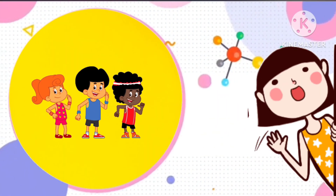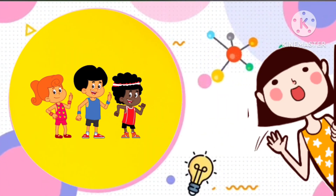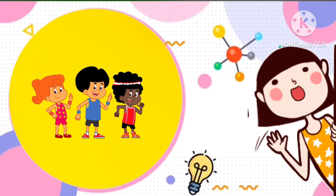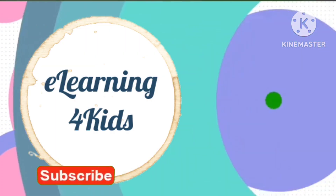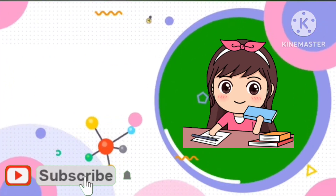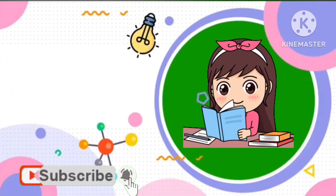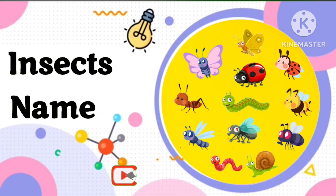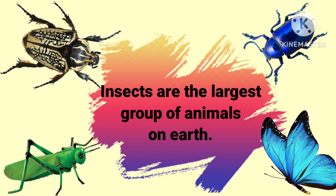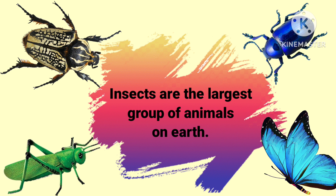Hello my little sweet kiddos. Happy to see you all. And welcome back to our channel, e-learning for kids. So today we are going to learn about insects names that are practically found everywhere. Insects are the largest group of animals on earth. Are you ready kids? Let's begin.